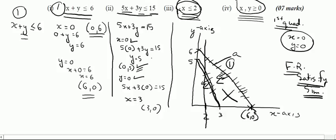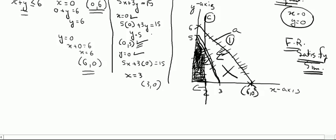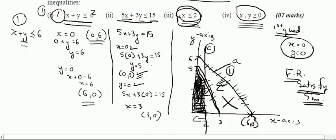The third condition, x less than or equal to 2, means the area should be on the left-hand side of the line x equals 2, since on the right-hand side x is greater than 2. So the feasible region is this shaded area only. Pick any point in it and you will see that x plus y is less than or equal to 6, 5x plus 3y is less than or equal to 15, x is less than or equal to 2, and x and y are both greater than 0.